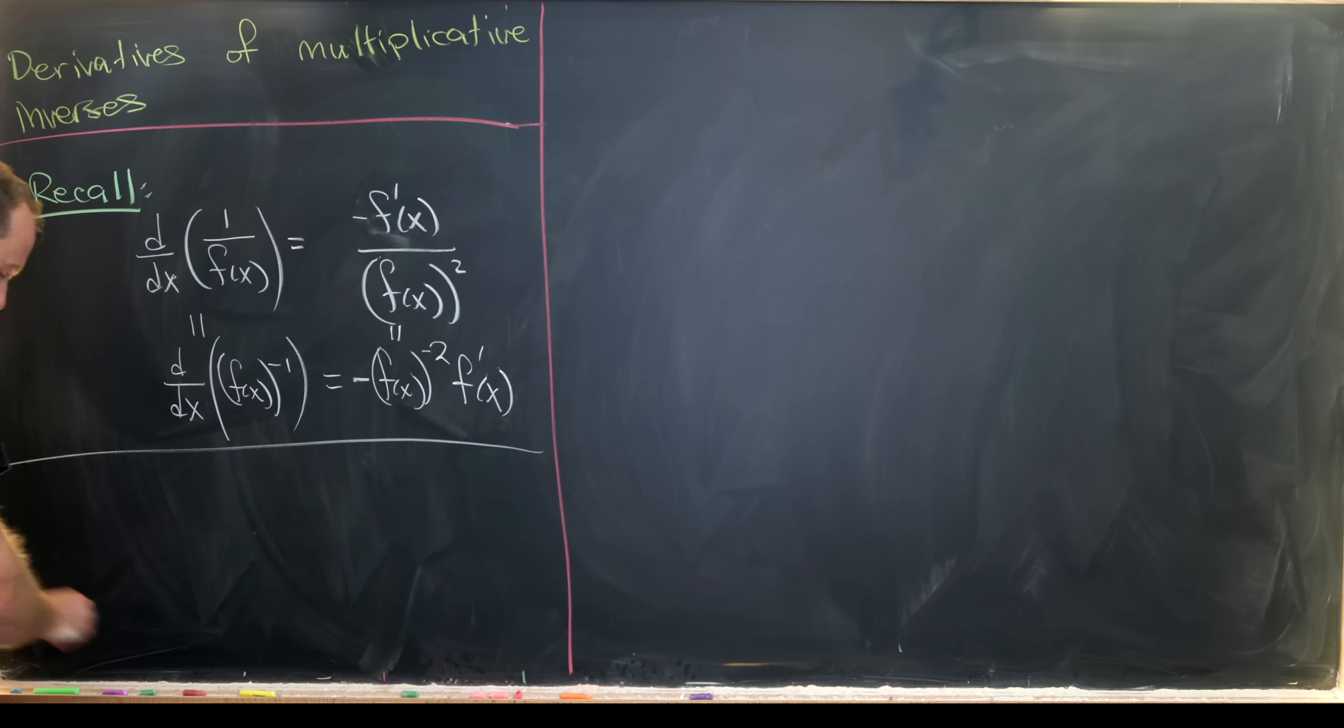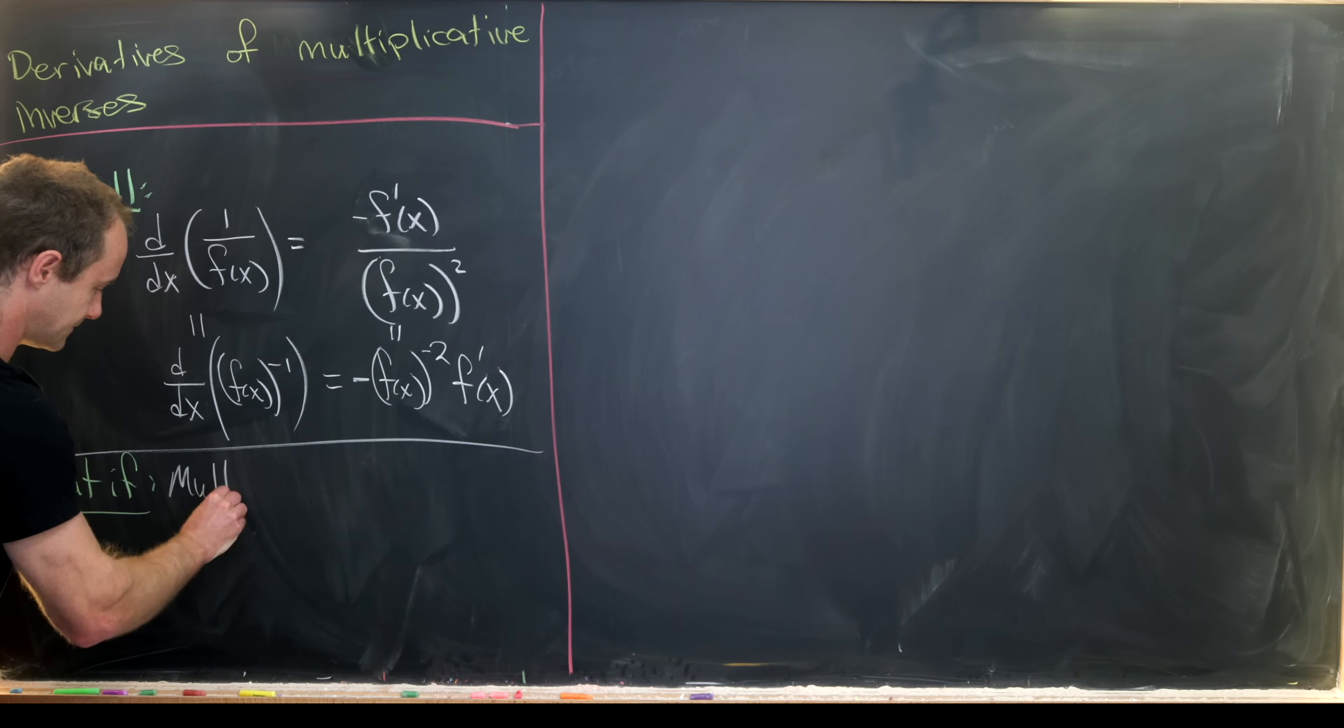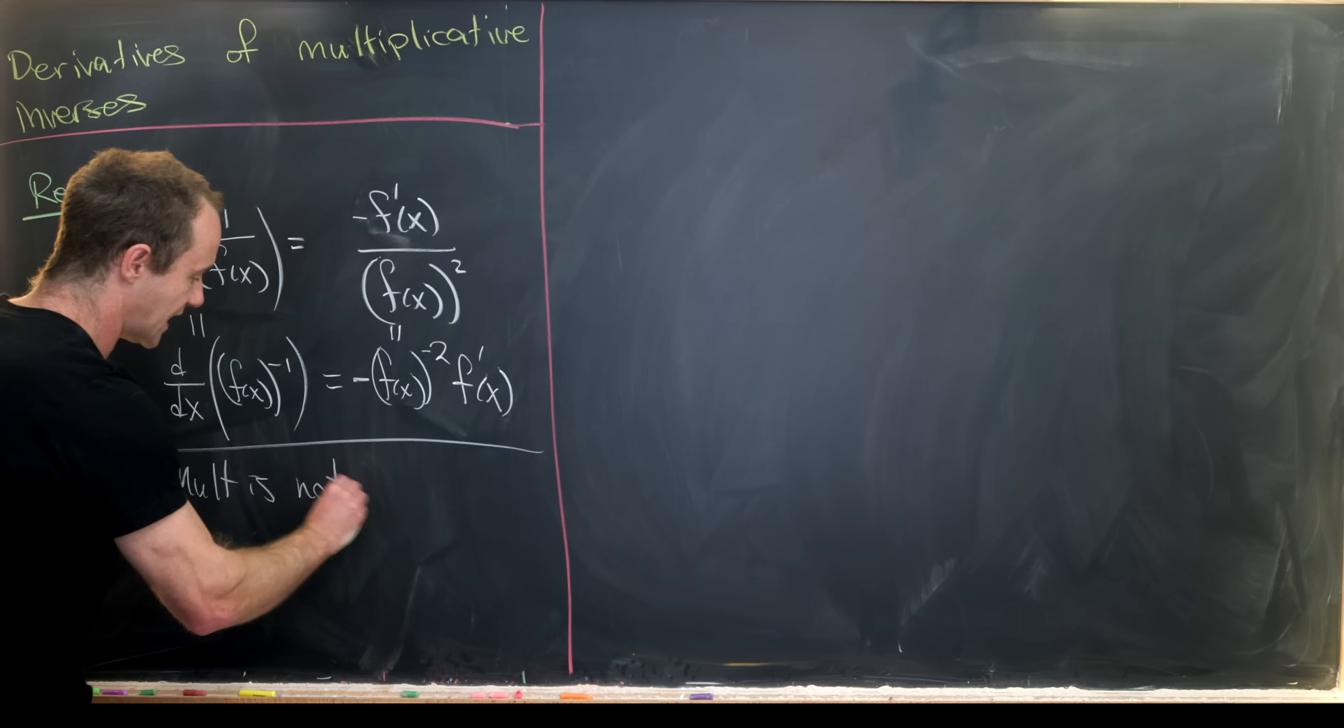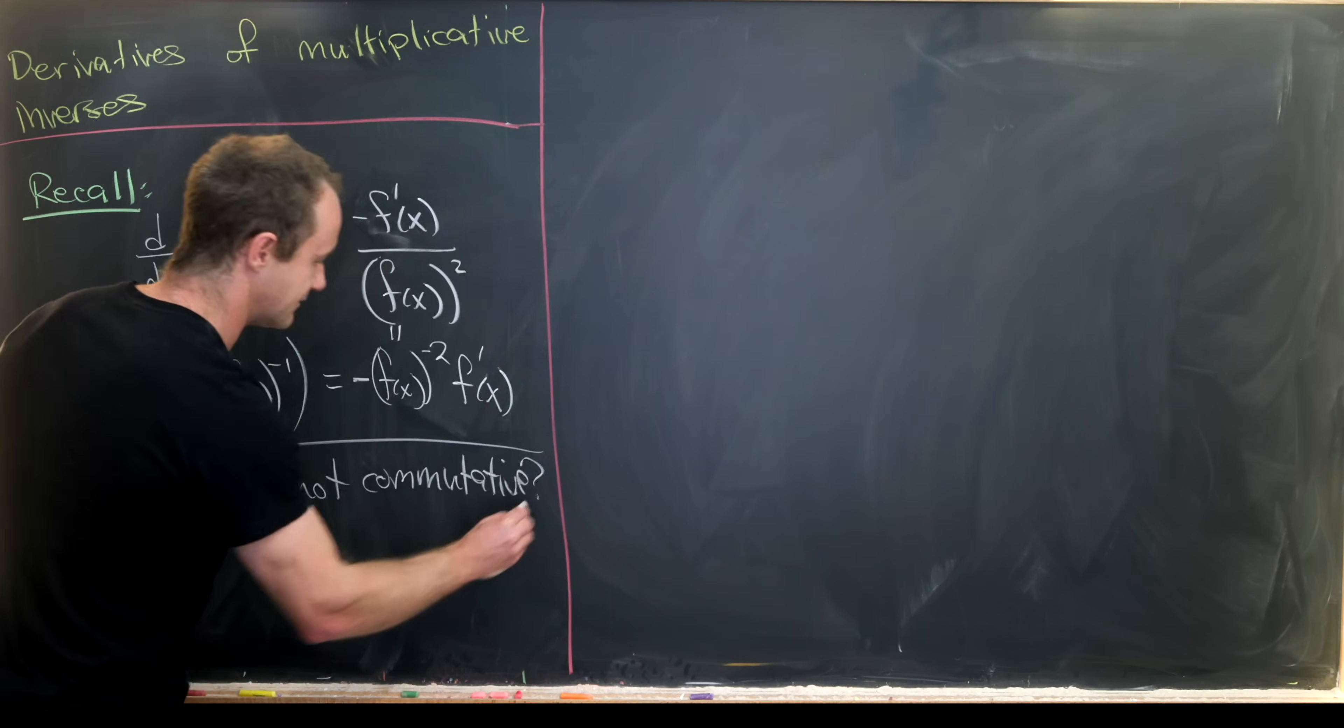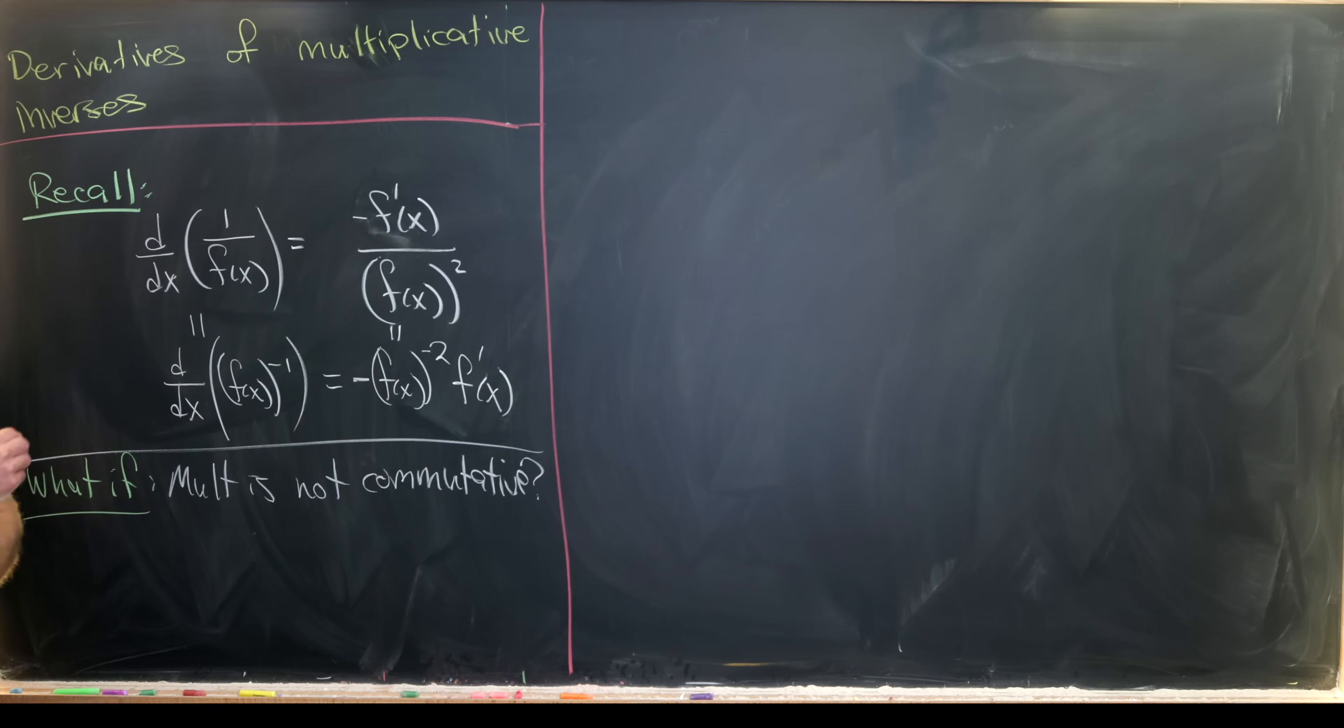That brings us to the main question here, which is a what-if question: what if multiplication is not commutative? It may not seem like we've used commutativity of multiplication here, but in fact we have.